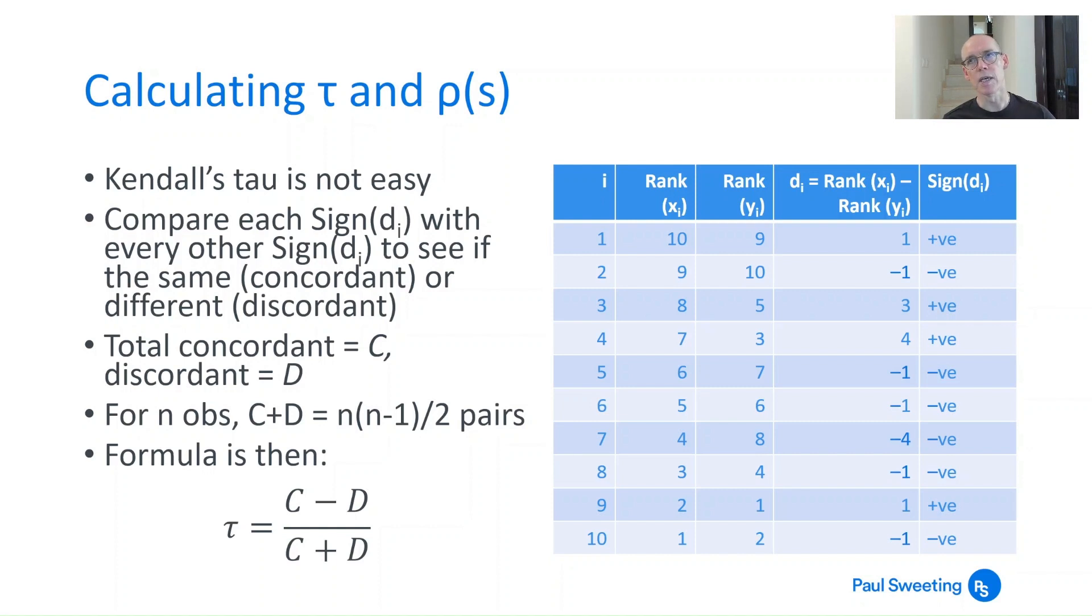You've got 10 cells here, so that means 45 comparisons. If you've got 100 cells, 100 items of data, then that means you're looking at around 5,000 comparisons. If you've got 1,000, then you're looking at about half a million. So it is a pain in the neck to calculate. But once you've done that, it's pretty straightforward. You just total up the number of concordant pairs and the number of discordant pairs you've got. And tau is then simply concordant minus discordant over concordant plus discordant.